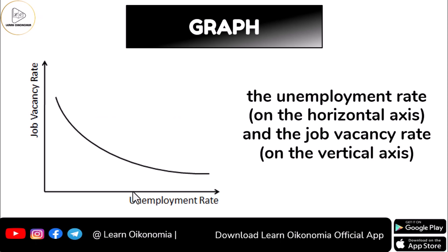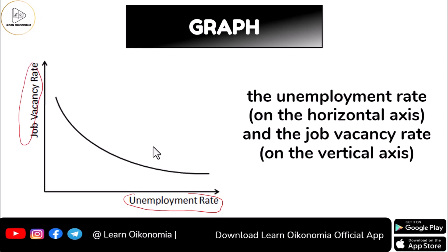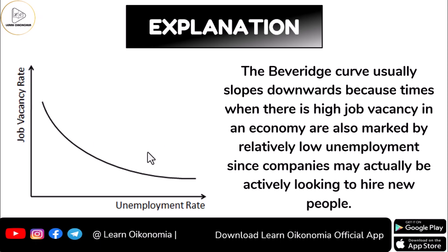This is a graphical representation of that relationship. You will be measuring the unemployment rate along the x-axis and the job vacancy rate along the y-axis. The Beveridge curve slopes downwards from left to right.